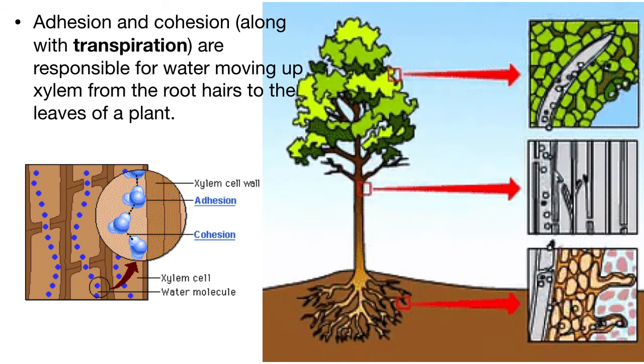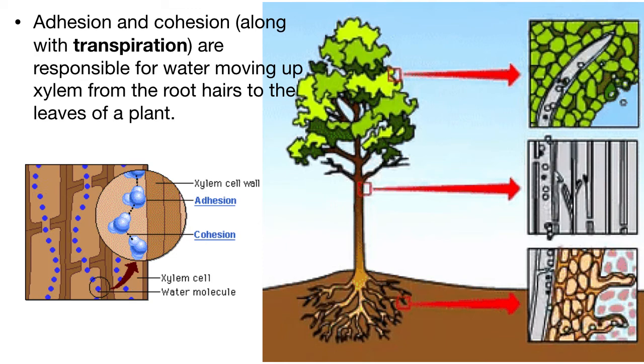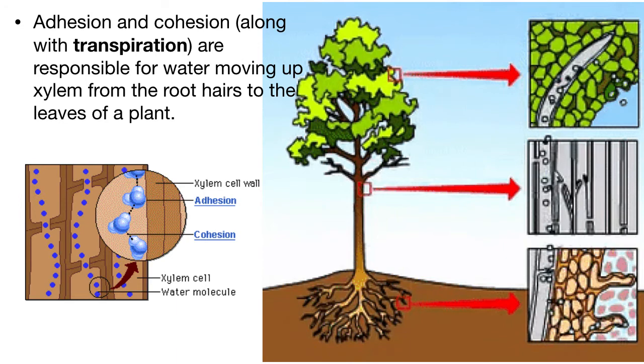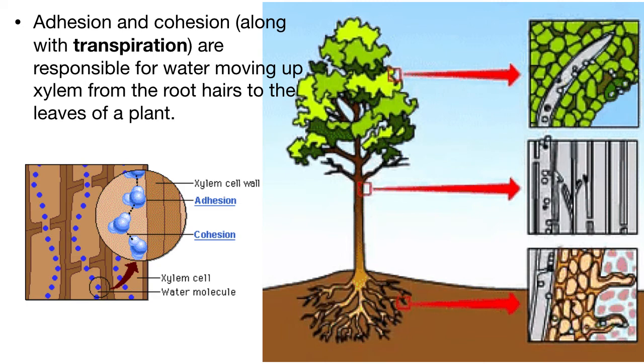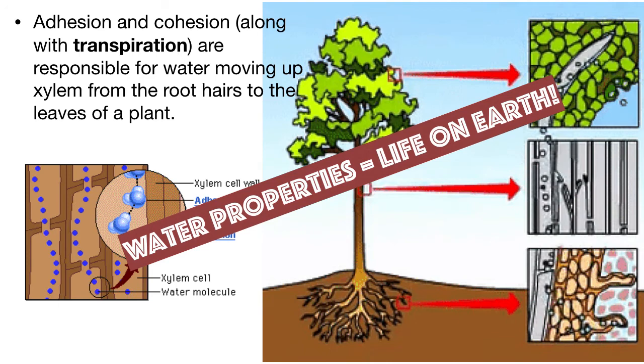So what happens is that the leaf pores, where water evaporates, the evaporating water is pulling the chain of water molecules out of the xylem. And cohesion between water molecules means that the chain of water molecules will be pulling new water molecules all the way down at the roots. So that's how trees can move water from the roots all the way to the top of a leaf.